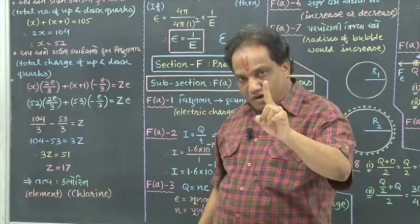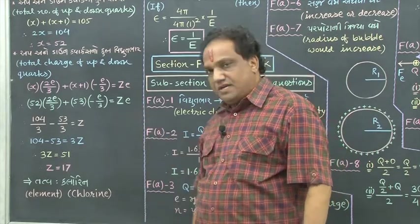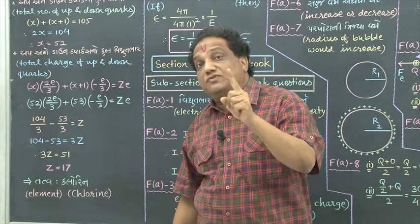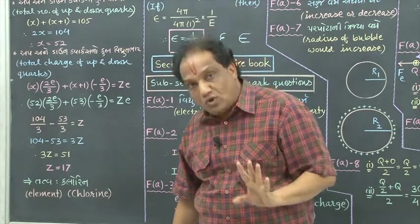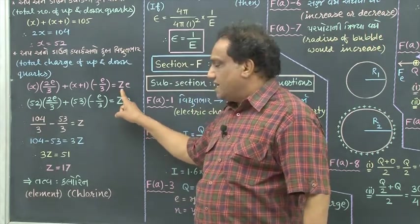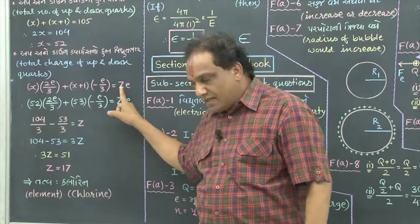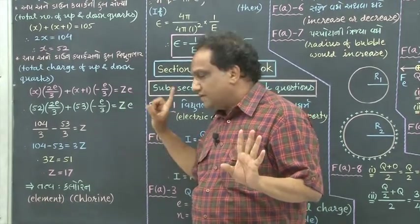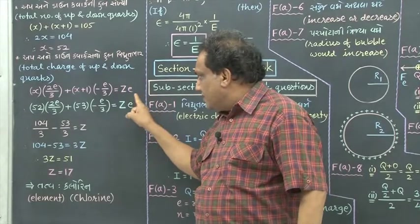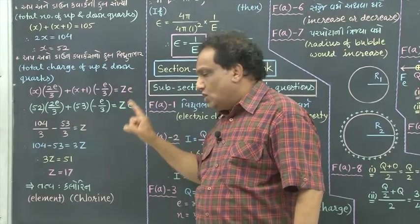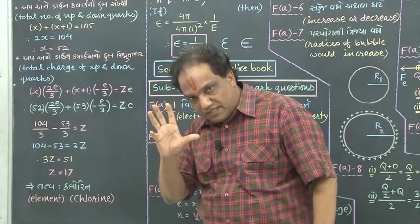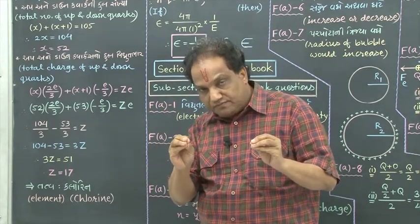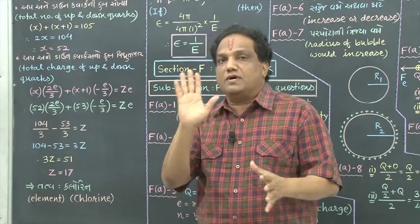One proton has charge plus E, and there are Z number of protons inside each nucleus of an atom having atomic number Z. So for one proton the charge is E; for Z protons it will be Z into E, where Z is the atomic number of the given element. This will give me the total positive charge of the nucleus, or you can say it is the total charge of up quarks and down quarks, because inside the nucleus there are protons and neutrons.